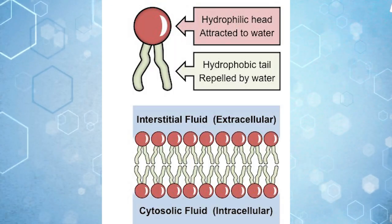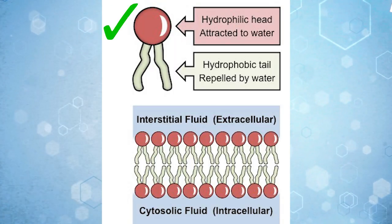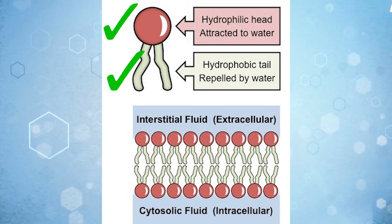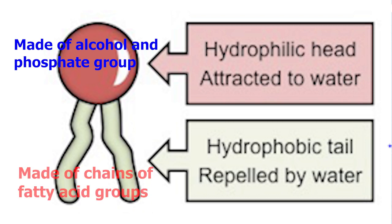The phospholipids have a hydrophilic, water-loving head and two hydrophobic, water-repelling tails. The head of a phospholipid is made of an alcohol and phosphate group, while the tails are made of fatty acids.